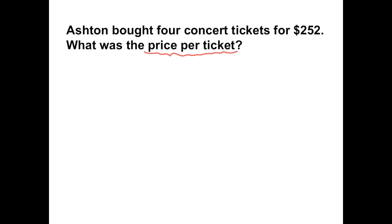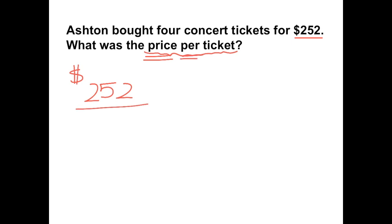We can set this up as a fraction by putting the price on top. The price he spent was $252. We can show 'per' as a fraction bar, and then the number of tickets he got on the bottom — four tickets.